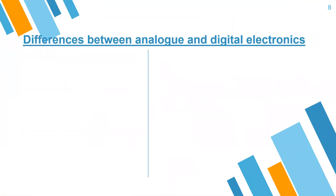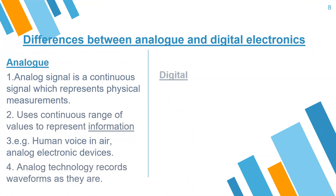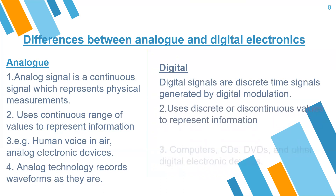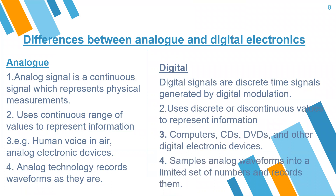The differences between analog and digital electronics. Number one: an analog signal is a continuous signal which represents physical measurement, while digital signals are discrete-time signals generated by digital modulation. Number two: analog uses a continuous range of values to represent information, whereas digital uses discrete or discontinuous values to represent information.